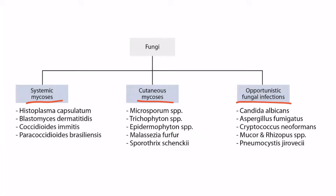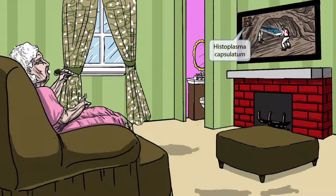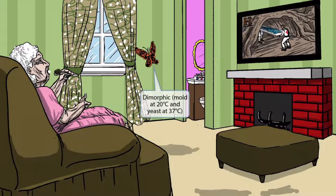We'll begin with Histoplasma capsulatum, which you can see right here. This scene takes place in an old grandma's home who is watching the History Channel. You can even see the letter H on the TV to help you remember this. History sounds like histoplasma, which should help you remember that this image is all about Histoplasma capsulatum.